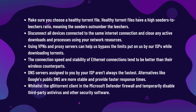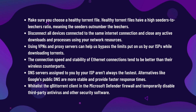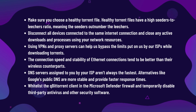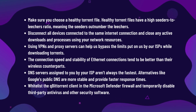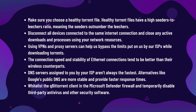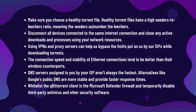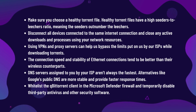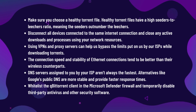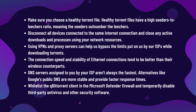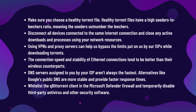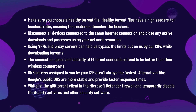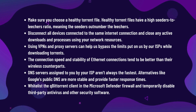Healthy torrent files have a high seeders-to-leechers ratio, meaning the seeders outnumber the leechers. Disconnect all devices connected to the same internet connection and close any active downloads and processes using your network resources. Using VPNs and proxy servers can help bypass limits put on you by your ISP while downloading torrents. Ethernet connections tend to be faster and more stable than wireless. DNS servers assigned by your ISP aren't always the fastest — alternatives like Google's public DNS are more stable and provide faster response times. Whitelist qBittorrent in Microsoft Defender Firewall and temporarily disable third-party antivirus and other security software.